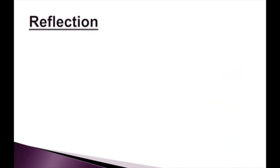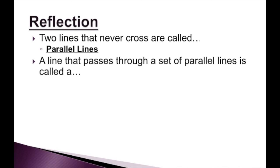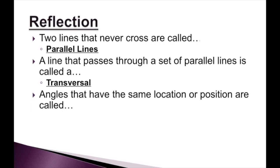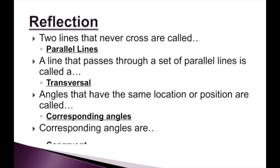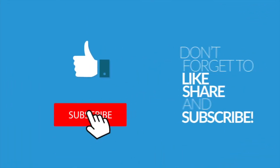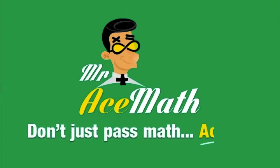Let's review this lesson. Two lines that never cross are called parallel lines. A line that passes through a set of parallel lines is called a transversal. Angles that have the same location or position are called corresponding angles. Corresponding angles are congruent. Don't forget to like, share, and subscribe. Thanks for using Mr. Ace Math — don't just pass math, ace it.